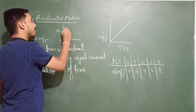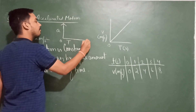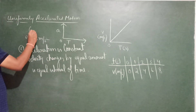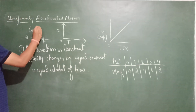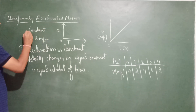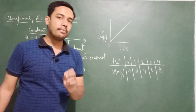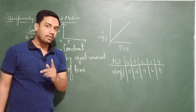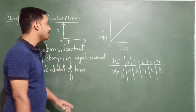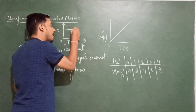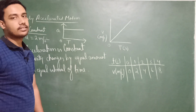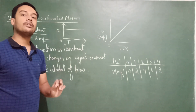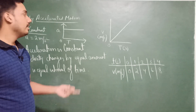Now let's plot the acceleration-time graph. The acceleration-time graph for uniformly accelerated motion gives a straight line parallel to the time axis.